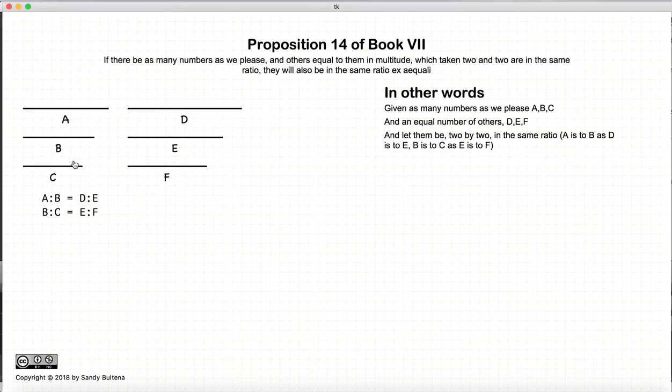and if the ratio of B to C is equal to the ratio of E to F, then the ratio from the beginning one, which is A, to the last one, which is C, so the ratio of A to C, will be equal to the ratio of D to F.